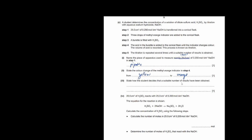State how the student decides that a suitable number of results have been obtained. This is a question on reliability. If they get answers close enough to each other, they decide a suitable number of results has been obtained. You need to write that at least two of the results are 0.2 cm³ or less from each other. This is how you prove that the test is reliable.